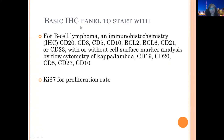For B-cell lymphomas, basic immunohistochemistry is composed of CD20, CD3, CD5, CD10, BCL2, BCL6, CD21, and CD23 — with or without cell surface markers. This can be established with the combination of immunohistochemistry on cell block as well as with the help of flow cytometry. We also need Ki-67 for the proliferation rate.